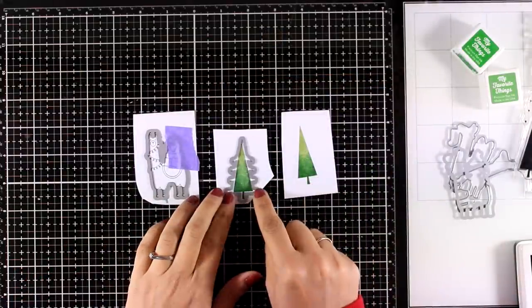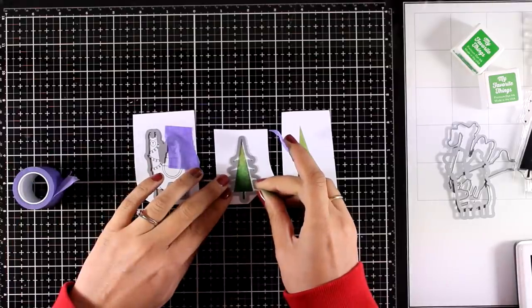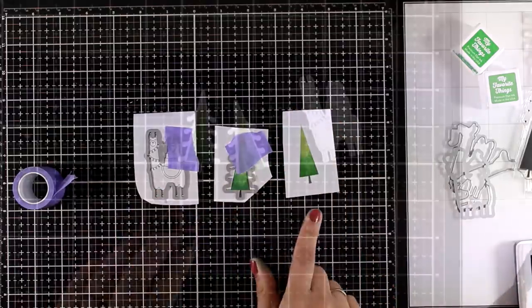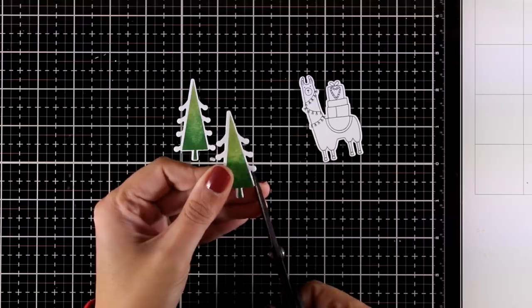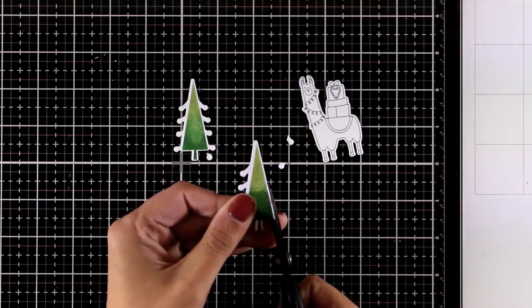There are matching dies for all the images, and there is one more layer or a couple of layers for this tree, but I need to cut it out first and then stamp the next layers to make sure that they're going to fit with the shape. Now for one of the trees I don't want it to be so fancy, so I'm just going to chop off the little details there.